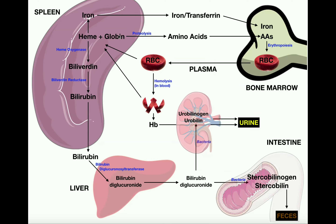Now the globin part of hemoglobin of the red blood cell is simply degraded into amino acids — this is the easier one. Proteolysis by enzymes within the spleen macrophage degrades the globins into amino acids, which are then dumped into the blood and go to whatever tissue needs them. And of course, to remake red blood cells via erythropoiesis, we need more amino acids.